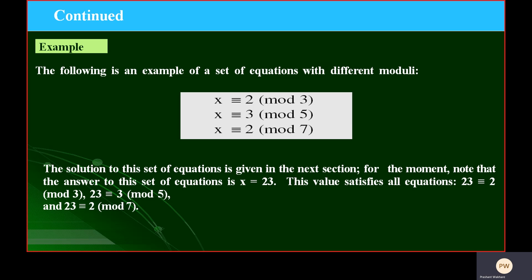The solution to this set of equations, note that the answer is X equals 23. If you put X equals 23, then you will realize X congruent 2 mod 3, X congruent 3 mod 5, and X congruent 2 mod 7. This is the Chinese Remainder Theorem.